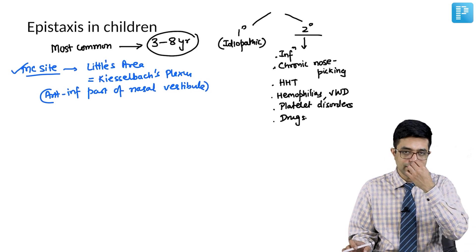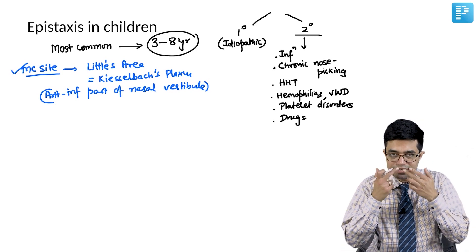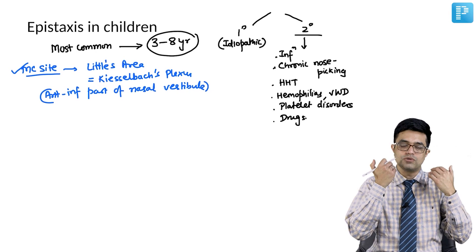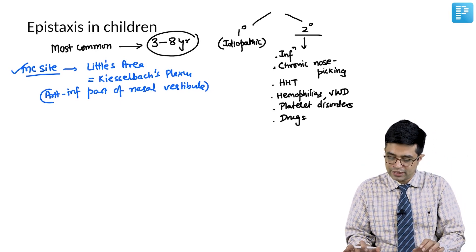So anterior epistaxis, that is blood coming anteriorly, is more common than blood going posteriorly, although posterior can be missed.